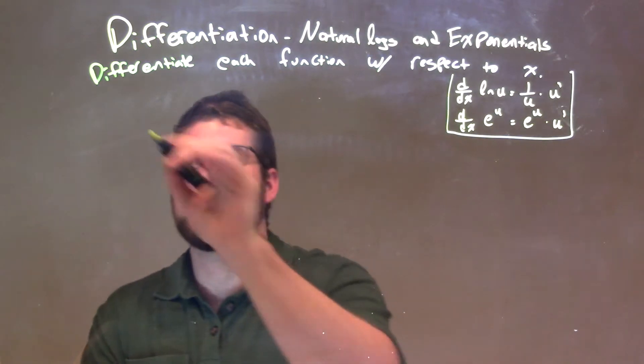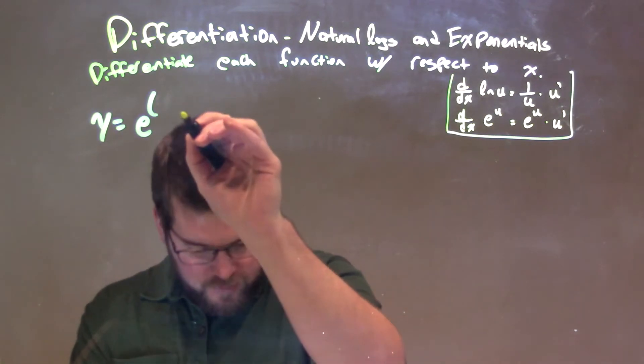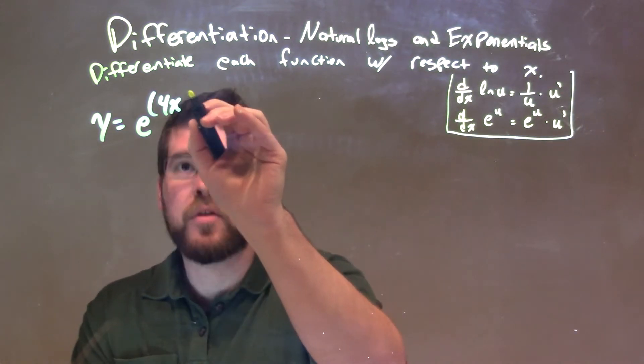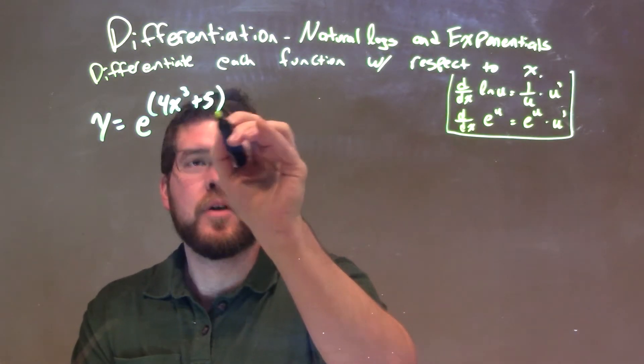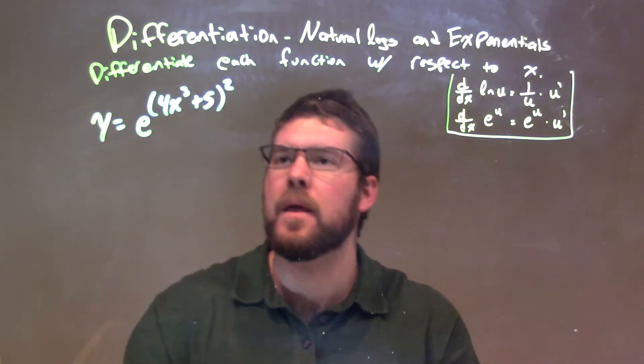So if I was given this function, y equals e to the x-ponent of 4x to the third plus 5, of the second power, or the exponent of the second power. Alright.